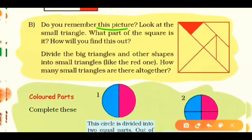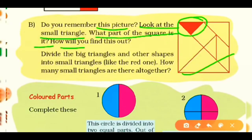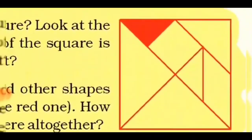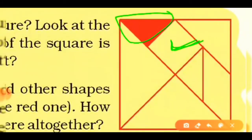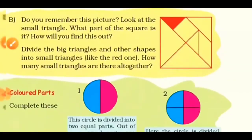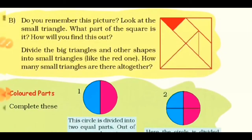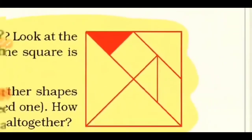Do you remember this picture? It is a tangram. Look at the small red triangle — it is colored. The question asks: what part of the square is it? You can easily say that this colored red part is half of the square. Now divide the big triangles and other shapes into small triangles like the red one.